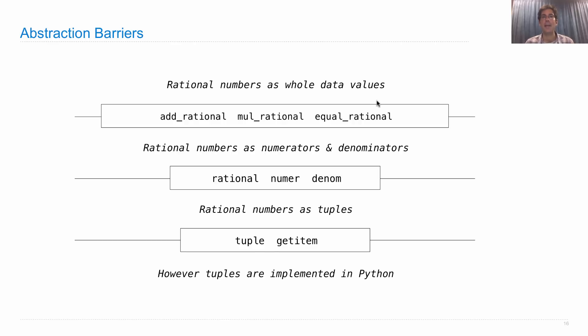In particular, here are the abstraction barriers that we'd like to include for a program that uses rational numbers as we've been using them before. At the very highest level, rational numbers are treated as whole data values.